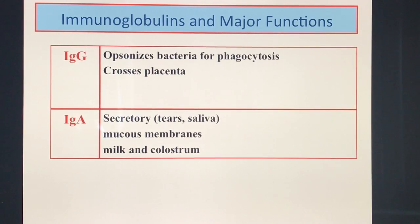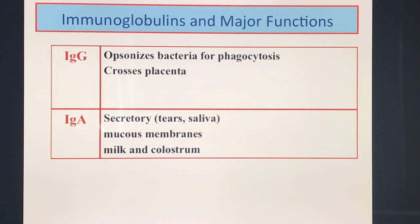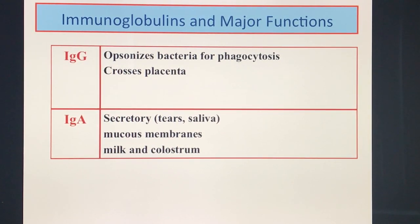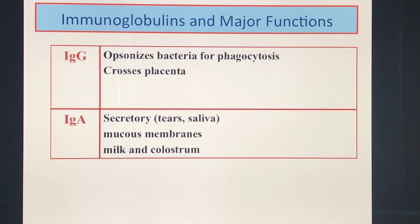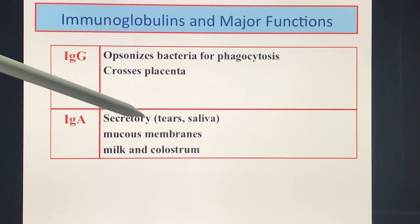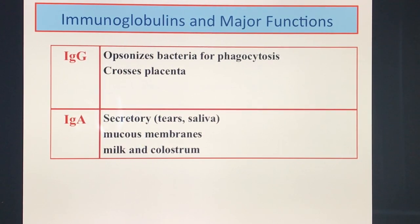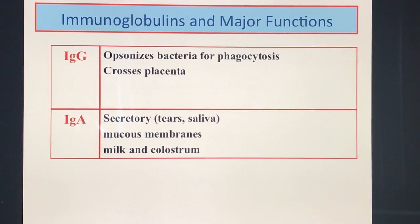The major functions of your immunoglobulins in summary: IgG crosses the placental barrier. IgG is also responsible for opsonization — it opsonizes bacteria for phagocytosis. IgA is secretory in function, found in bodily secretions such as tears and saliva, in the colostrum and milk, and along the surfaces of mucous membranes of the gastrointestinal tract, respiratory tract, and genitourinary tract.